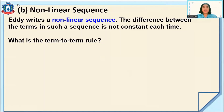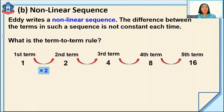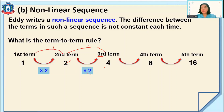Now let's study about nonlinear sequence. Eddie writes a nonlinear sequence. The difference between the terms in such a sequence is not constant each time. The first term is one; we multiply it by two to get two. The difference between one and two is one. But in the third term, we multiply two by two to get four. Four minus two gives a difference of two, not one. So the differences are not the same from the first to second to third term.